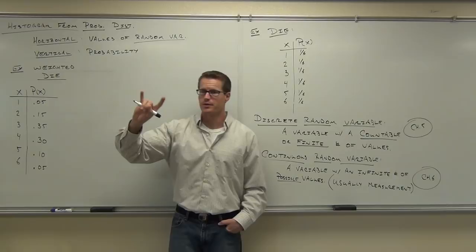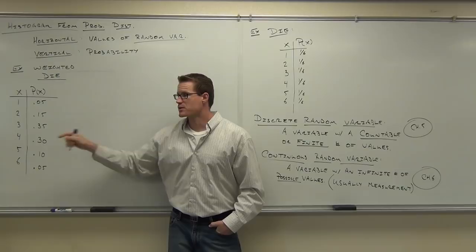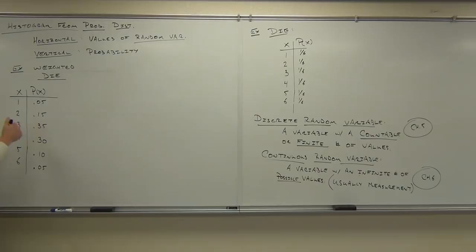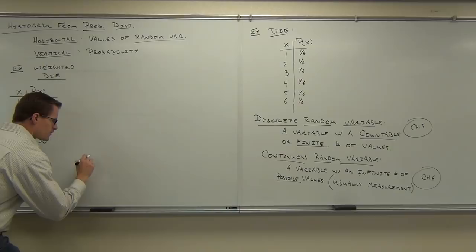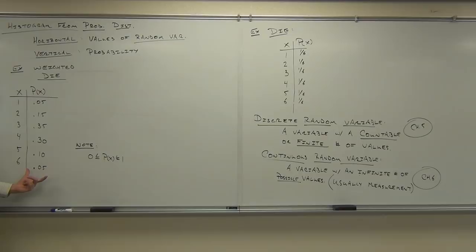Before we go further, I need you to identify whether this is a valid probability distribution. There are only two ways a probability distribution would not make sense. First: can you ever have a negative probability? No. So one way it wouldn't make sense is if one of the probabilities were negative. The first rule is that every probability must be between 0 and 1.